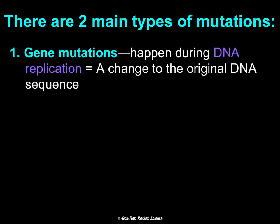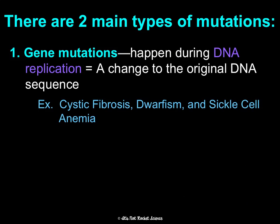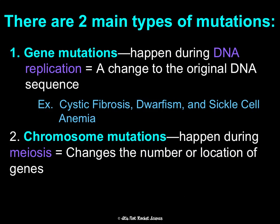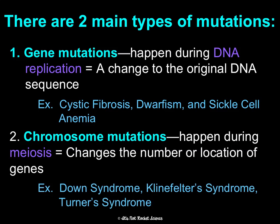There are two main types of mutations. Gene mutations tend to happen during DNA replication and just change the original DNA sequence. This causes disorders such as cystic fibrosis, dwarfism, and sickle cell anemia. And then there are also chromosome mutations, which happen during meiosis and change the number or location of genes — affecting large sections of chromosomes and multiple genes. Examples include Down syndrome, Klinefelter syndrome, and Turner syndrome.